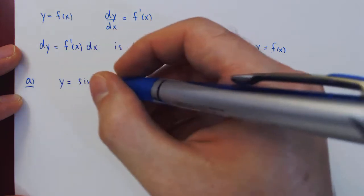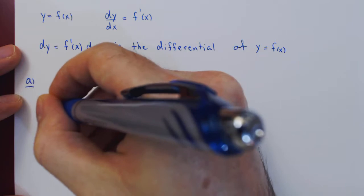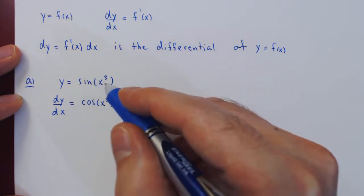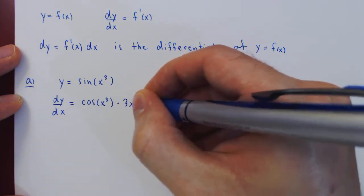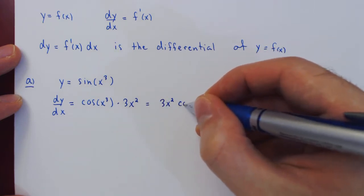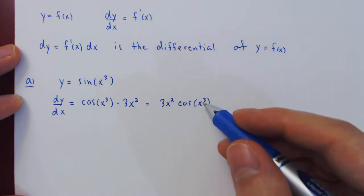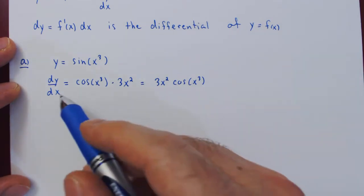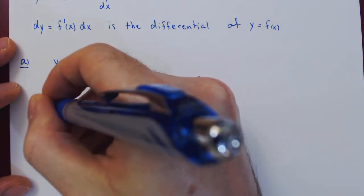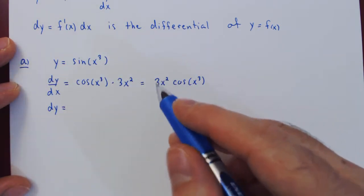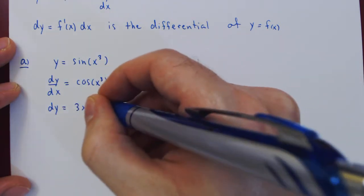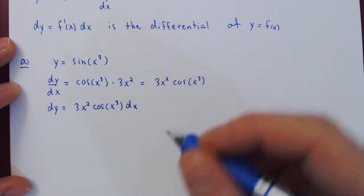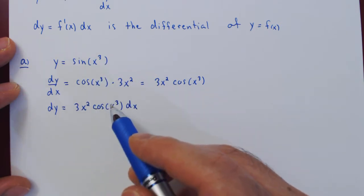First we find the derivative. By the chain rule we will get cosine of x cubed, times the derivative of the argument, which is 3x squared. We can write the simpler term first. And then we have the derivative of the function dy over dx. The differential is simply the infinitesimal change in y, dy. So to isolate dy, we multiply by dx. Therefore, the differential of the function sine of x cubed is 3x squared cos of x cubed dx.